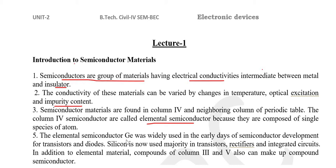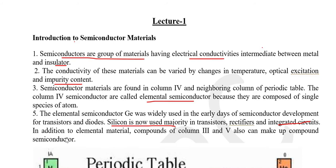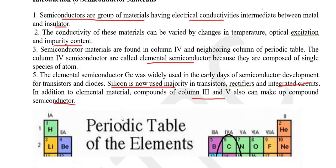In earlier days, germanium was the widely used elemental semiconductor. But nowadays, silicon is majorly used in transistors, rectifiers, and in integrated circuits or ICs. In addition to elemental materials, compounds of column 3 and column 5 can also make up compound semiconductors. So column 4 materials are termed as elemental semiconductors, while column 4 material combined with column 3 and column 5 can make compound semiconductors.